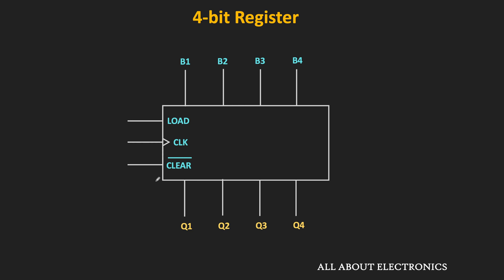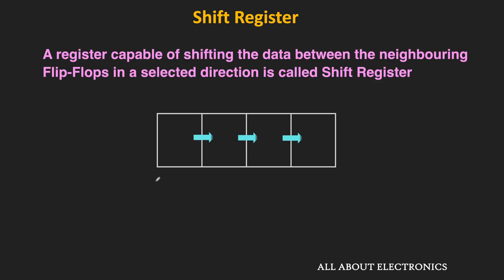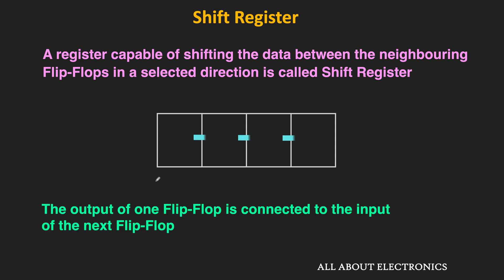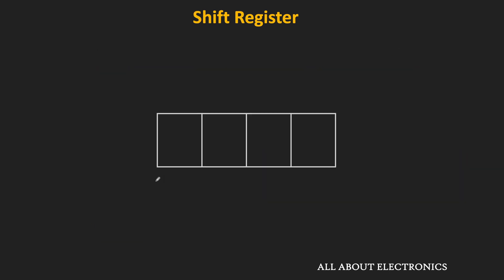So in this type of register, we can store the data or we can retrieve the data. But there is another type of register where it is possible to shift the binary data between the neighboring flip-flops of the register. This type of register is known as the shift register. In this type of register, the output of one flip-flop is connected to the input of the next flip-flop. In the register circuit discussed so far, there is no interconnection between the flip-flops, but in the shift register, the neighboring flip-flops are interconnected.